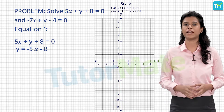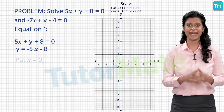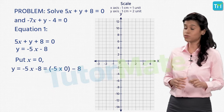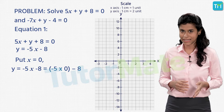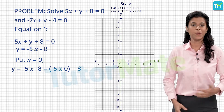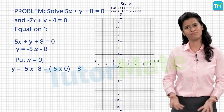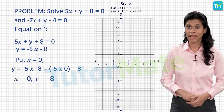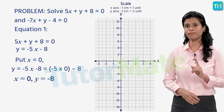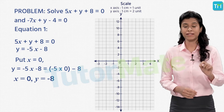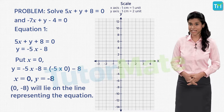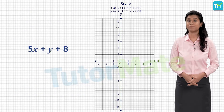For this we will consider three different values of x. First we take x is equal to 0. Substituting this into y equals minus 5x minus 8, we get y is equal to minus 5 into 0 minus 8, which equals minus 8. So x equal to 0 and y equal to minus 8 is a solution of the first equation.